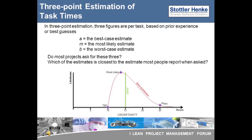A PERT duration for the task can be calculated. Critical chain does not use the PERT estimate, so the details of the calculation will not be described further here. This diagram illustrates the risk in asking for one estimate without clarifying what is being asked for. For example, if the recipient of the information assumed that the estimate was the pessimistic estimate, while the provider of the estimate assumed it was the most likely estimate, it is obvious that this would cause problems.